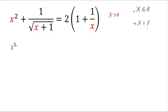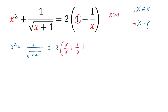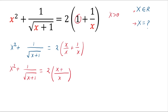Now, x squared plus 1 over square root of x plus 1 equals 2 times — this 1 plus 1 over x is the same as x over x plus 1 over x. Then x squared plus 1 over square root of x plus 1 equals 2 times, with common denominator x and numerator x plus 1, giving 2 times x plus 1 over x, which equals 2x plus 2 over x.